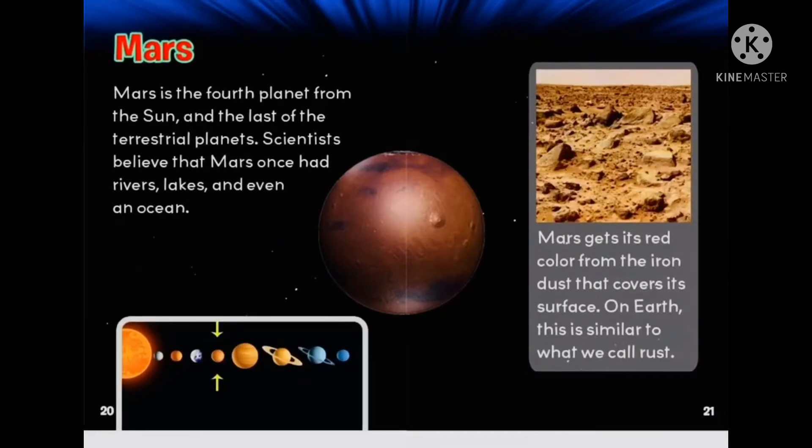Mars. Mars is the fourth planet from the sun and the last of the terrestrial planets. Scientists believe that Mars once had rivers, lakes, and even an ocean. Mars gets its red color from the iron dust that covers its surface. On Earth, this is similar to what we call rust.